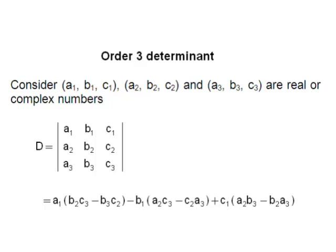In short, each element of the first row is multiplied by a second order determinant obtained by omitting the row and column in which the element occurs. The signs of the products are alternately positive and negative. Finally, we add all the products.